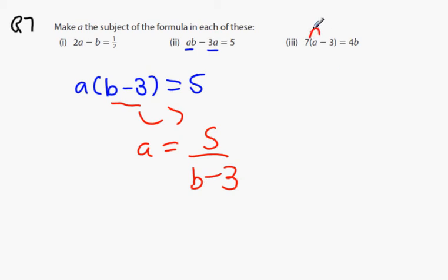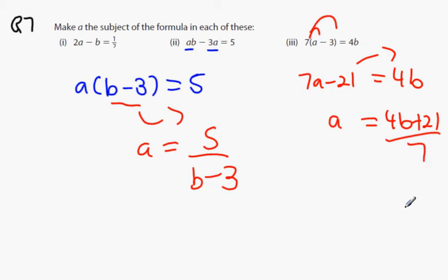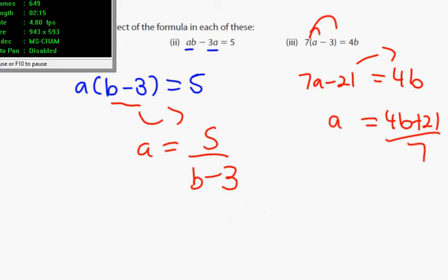Next one. 7A minus 21 equals 4B. Bring over your 21. And then divide it by 7. And that's your answer there. 4B plus 21 all over 7. Okay. Any questions thus far? No.